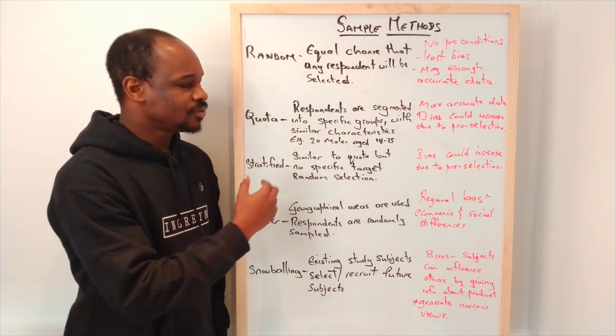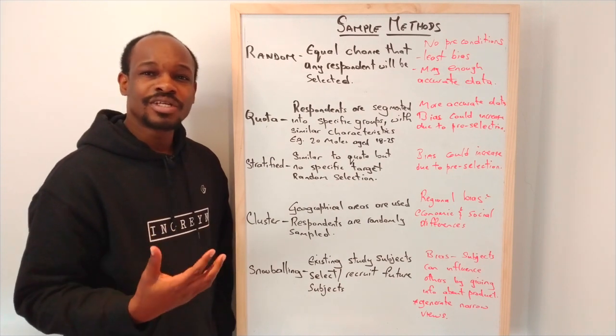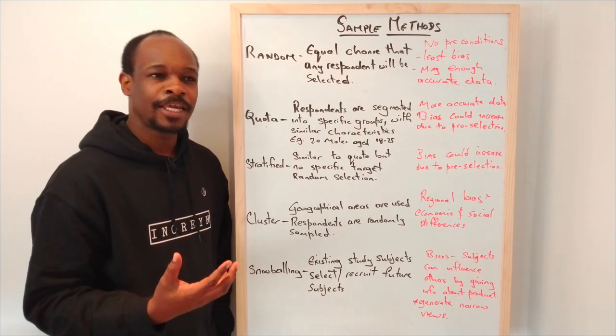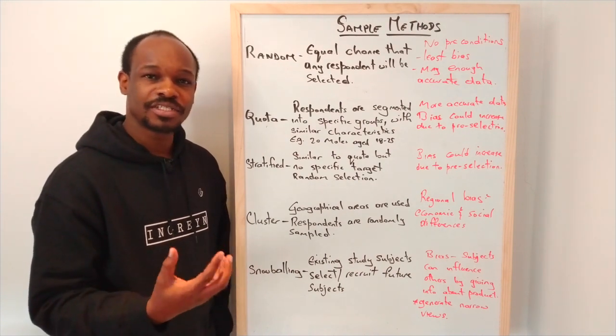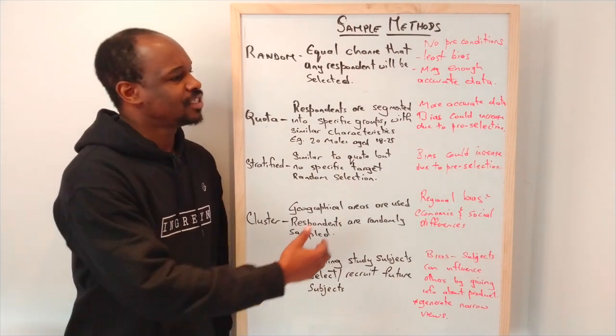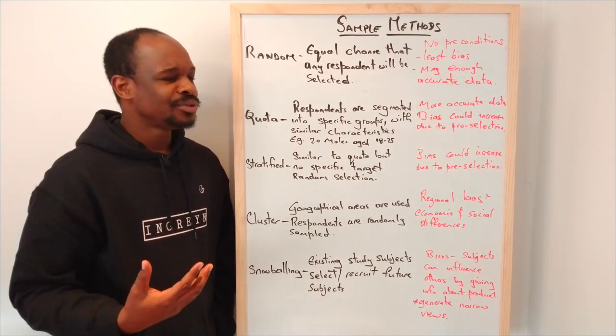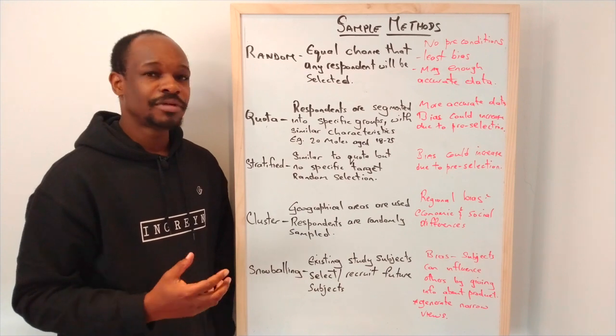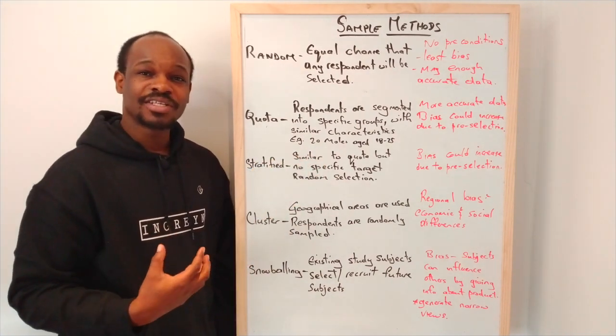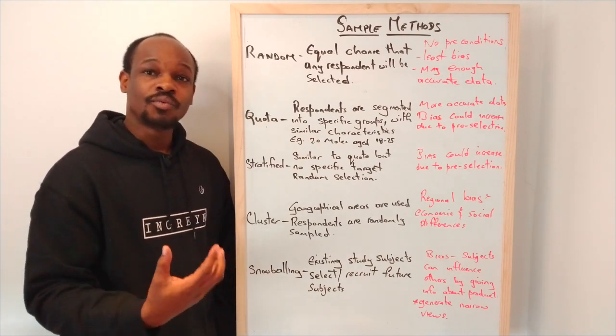Let's say we're doing something about technology and we might want to select students who would have graduated with a bachelor's in computer science or information technology. There is that pre-selection which could lead to bias in terms of collecting information, but this information could be more accurate because you're using individuals who have that background in what you want.